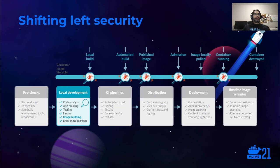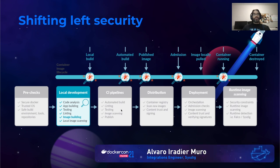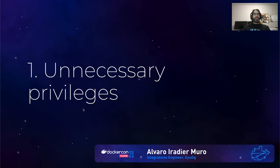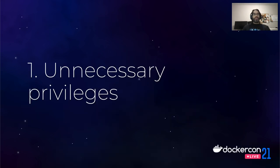What do we mean by early stages? The container lifecycle comprises multiple stages since the Dockerfile is created, built, and tested on a local developer machine, through the CI/CD pipeline automations, being distributed to a registry, and finally being deployed and executed somewhere. We will focus mainly on the image building process that happens locally on the developer machine. So let's jump to the first block: unnecessary privileges.